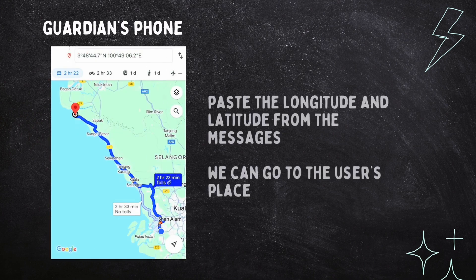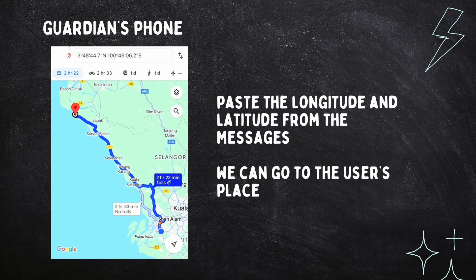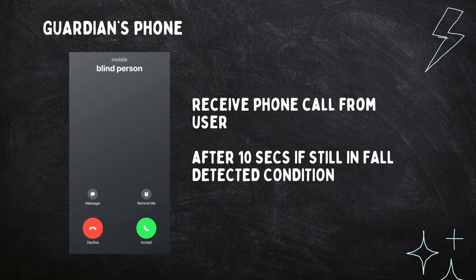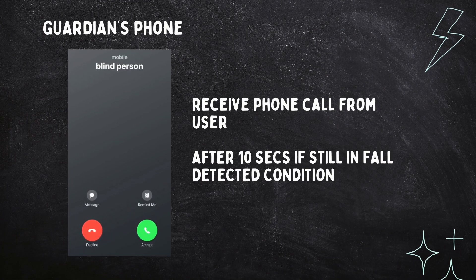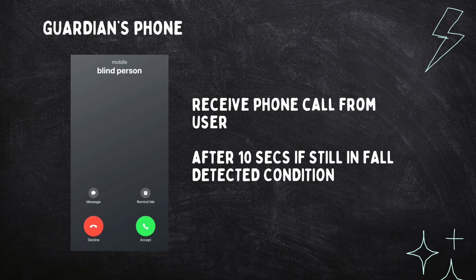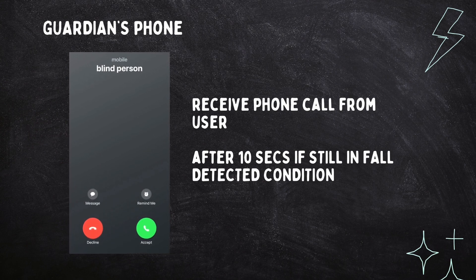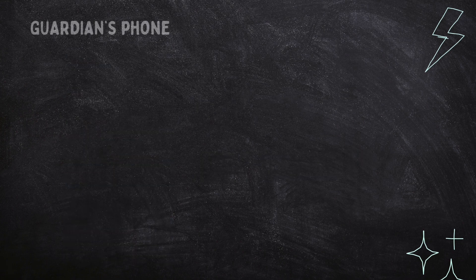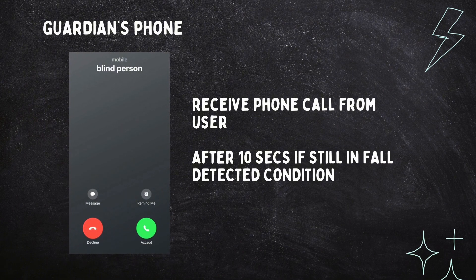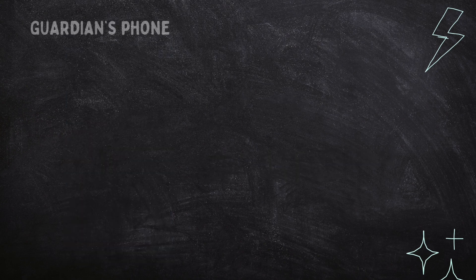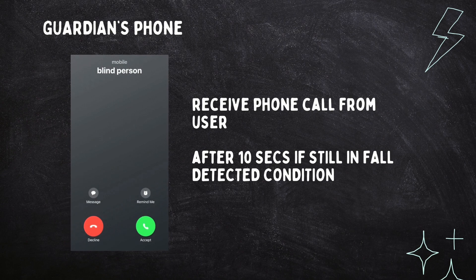We have to paste the coordinates into a maps application to find out where the user is. We can also send the location to the nearest hospital if it's an emergency. In case the user is still in a fall detection condition after 10 seconds, a message is sent indicating the user is fainted or cannot move, and the guardian will automatically receive a call from the user.